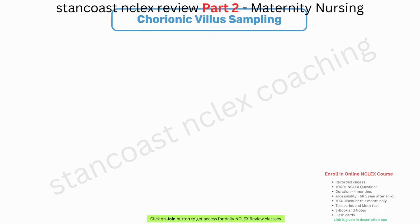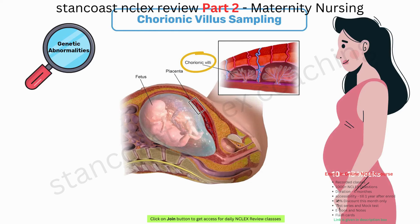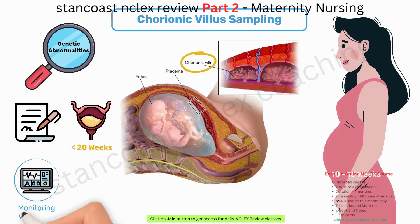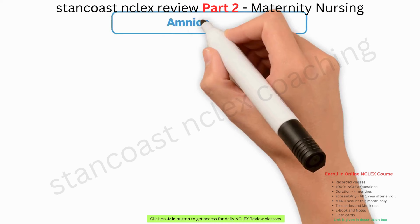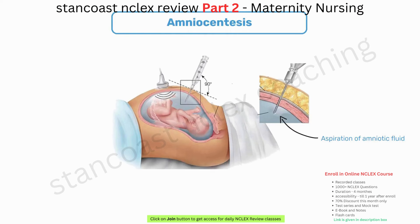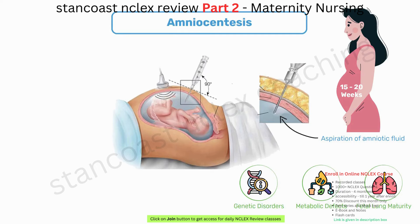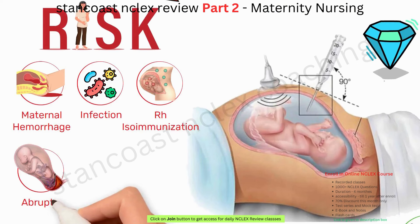Chorionic villus sampling (CVS) is performed to detect genetic abnormalities by aspirating a small sample of chorionic villus tissue between 10 and 13 weeks of gestation. This procedure necessitates informed consent and may involve bladder filling for visualization if performed before 20 weeks. RH-negative women may receive Rho-D immune globulin. Amniocentesis entails the aspiration of amniotic fluid, ideally conducted between 15 and 20 weeks of pregnancy, aiding in the detection of genetic disorders, metabolic defects, and assessment of fetal lung maturity. Potential risks include maternal hemorrhage, infection, RH isoimmunization, abruptio placentae, amniotic fluid emboli, and premature rupture of the membranes.